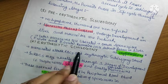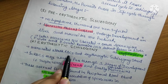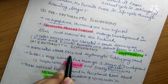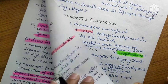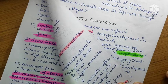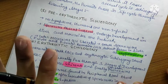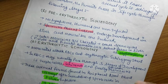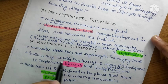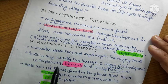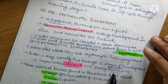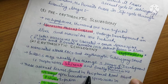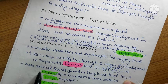The erythrocytic schizogamy is the stage in which merozoites attack the RBCs. Inside the RBC, the merozoites are converted into trophozoites. The RBC then undergoes three stages of development: trophozoite, schizogamy, and finally the daughter merozoites. The RBC eventually bursts.